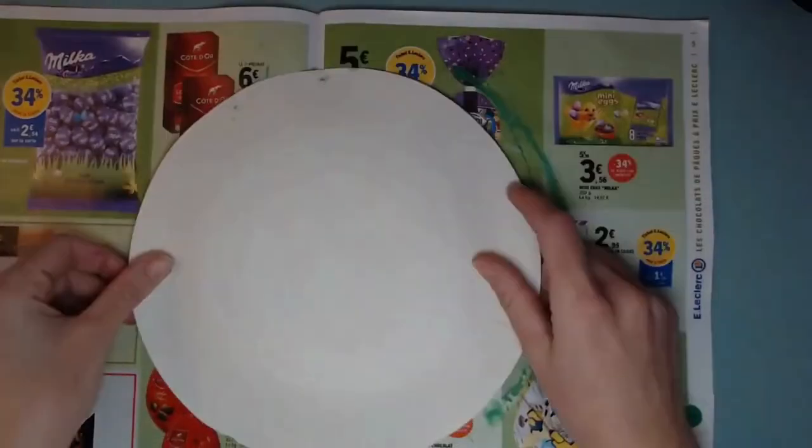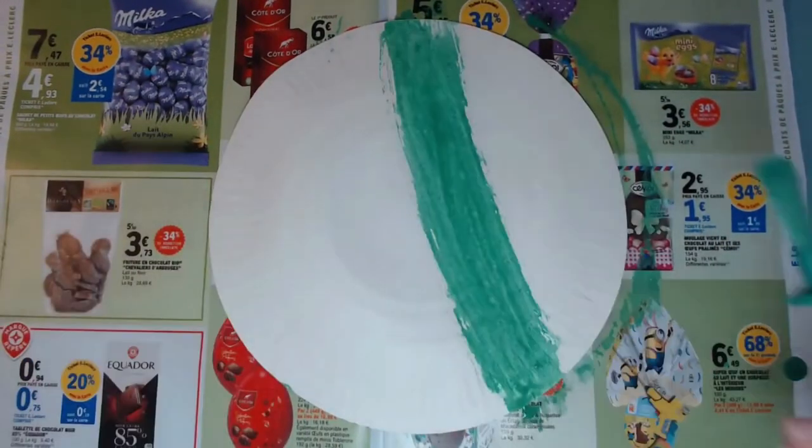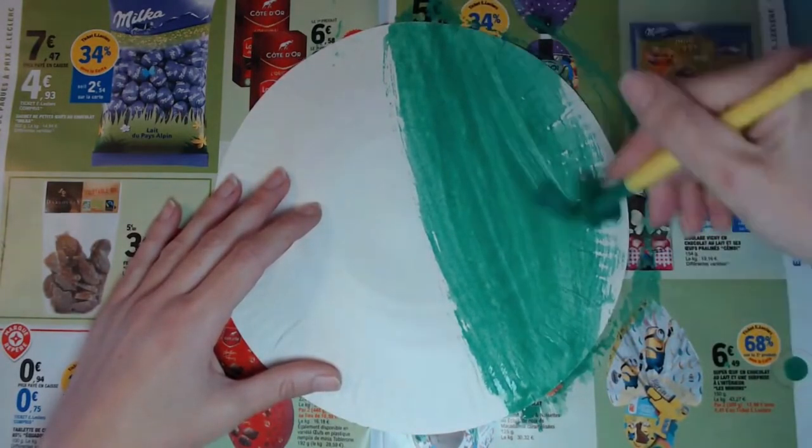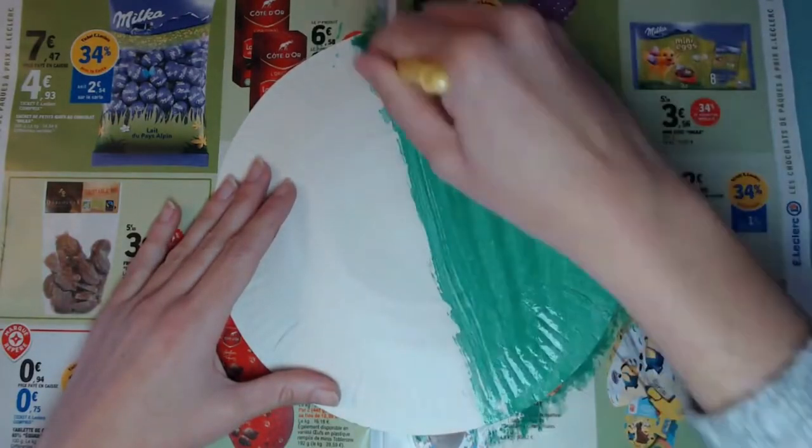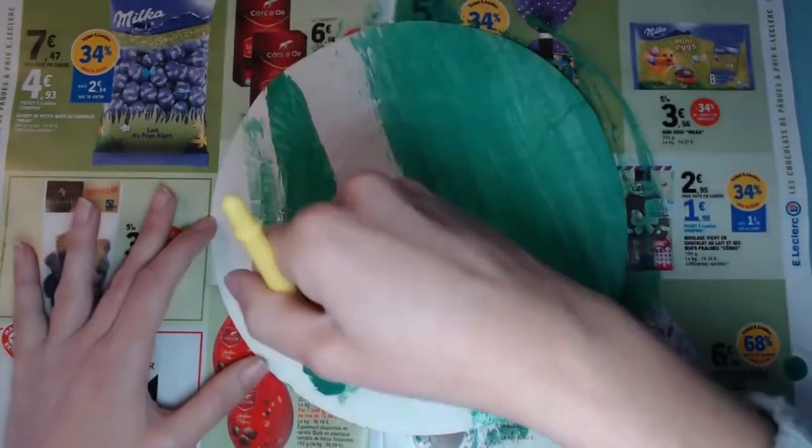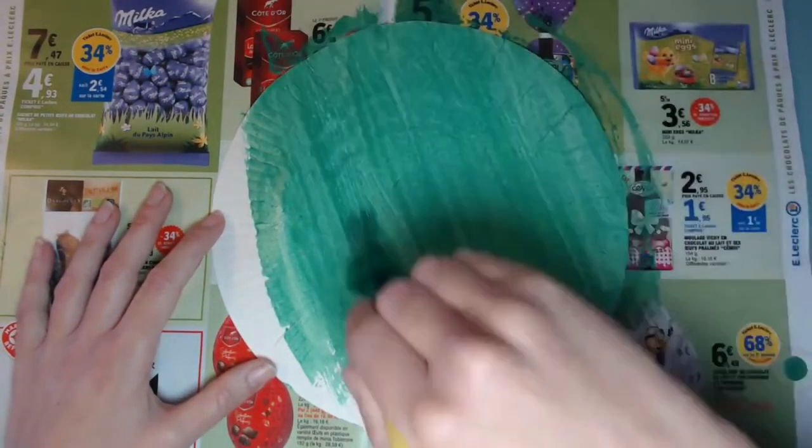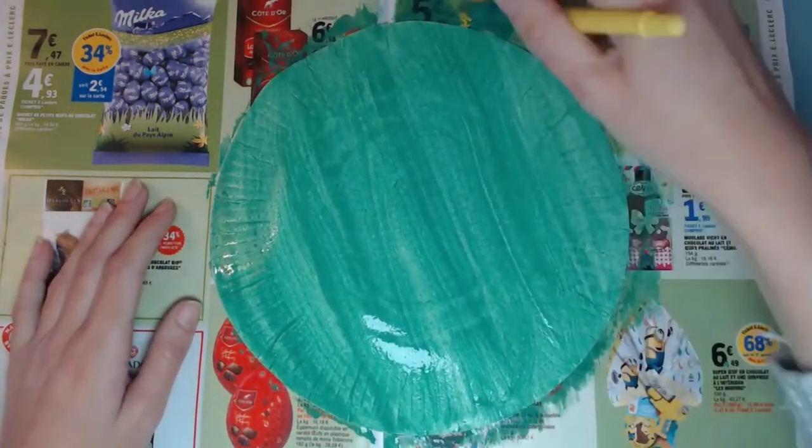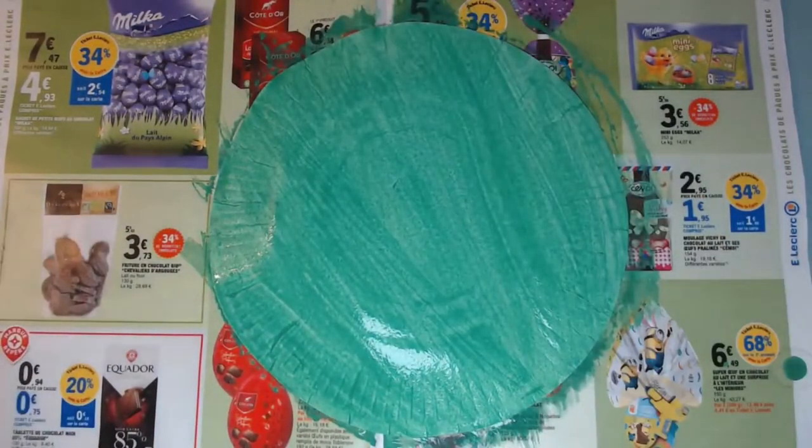And now back to our paper plate. Turn it over and paint the other side. Once again using long brushstrokes and making sure you're painting all the white spaces. Now you're going to cut to the rim of the paper plate. Great job. Leave your plate to dry.